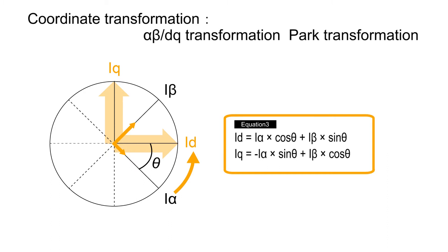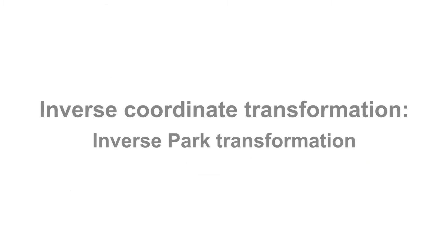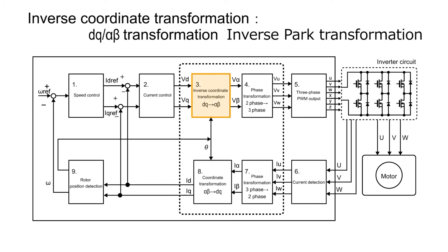This stationary coordinate has to be converted to a rotational coordinate according to the rotor position. In inverse transformation, voltages of rotational coordinates V-d and V-q are converted to voltages of stationary coordinates V-alpha and V-beta respectively. V-d is a voltage of the magnetic component, and V-q is a voltage of the torque component. They are calculated in current control. This conversion is called inverse Park transformation.